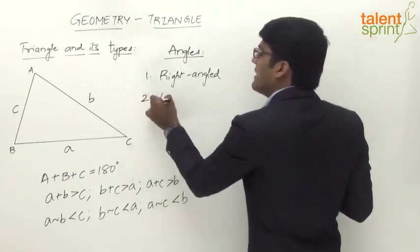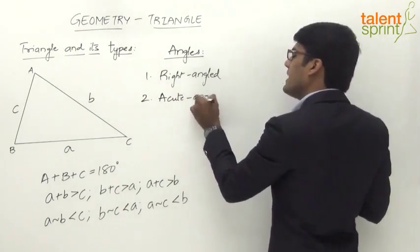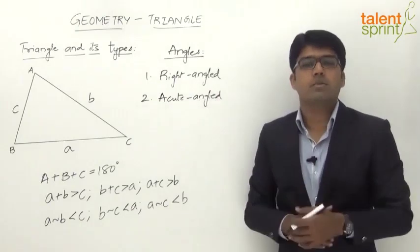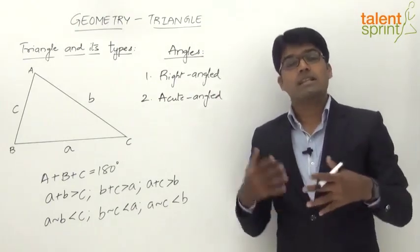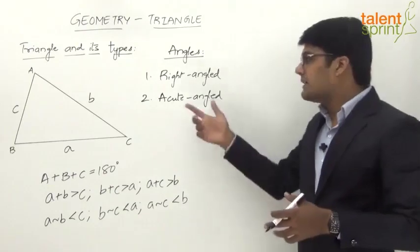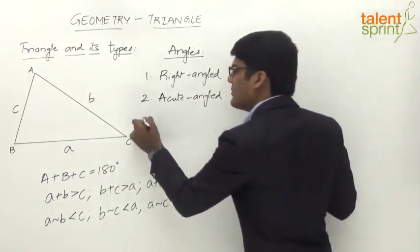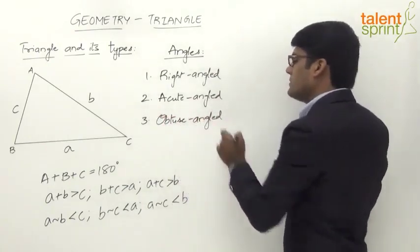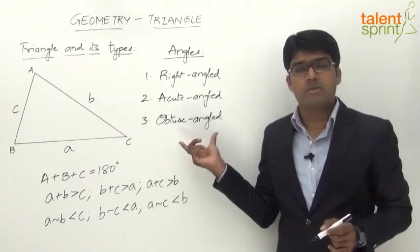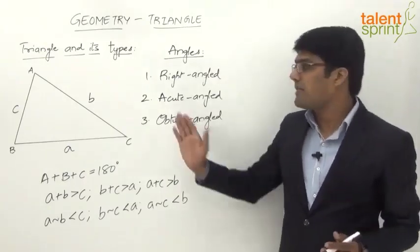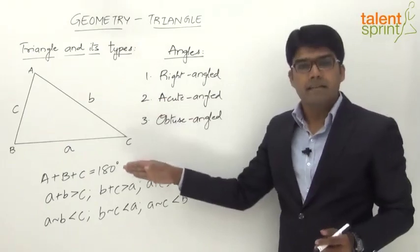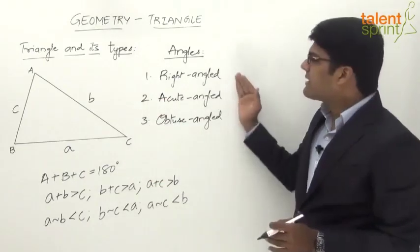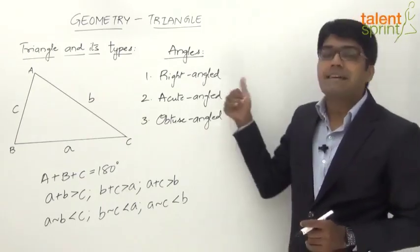The second type is an acute-angled triangle. An acute angle is less than 90 degrees, so if all three angles in a triangle are less than 90 degrees, it is called an acute-angled triangle. The third type is an obtuse-angled triangle. An obtuse angle is between 90 and 180 degrees, so if one of the angles is greater than 90 degrees, the triangle is known as an obtuse-angled triangle.